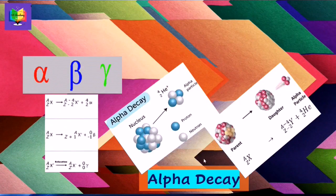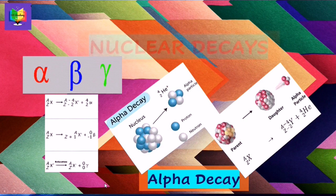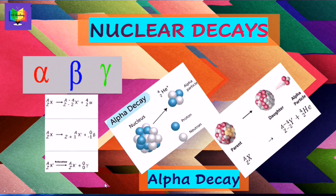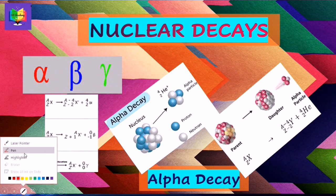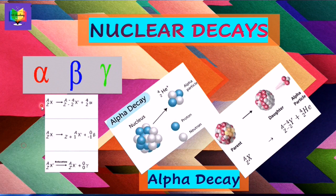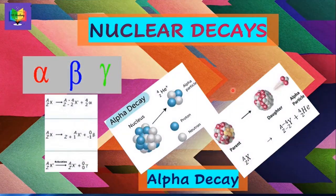Today's topic is nuclear decays. Nuclear decays, also known as radioactive decays, are of three types: alpha, beta, and gamma decays. These are the first three letters of the Greek alphabets. Today we will focus on alpha decay.